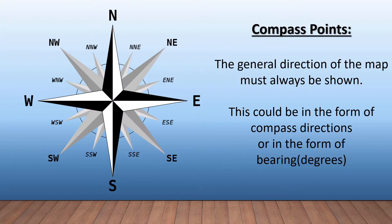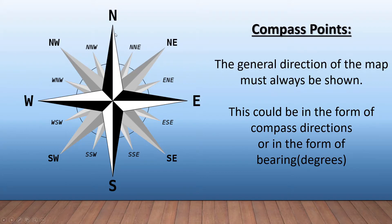Let's look at one or two examples quickly. This is what your compass points will look like. You've got your main points: north, east, south, and west, and then in between these you've got north-north-east, north-east, east-north-east, and so on. Those are your compass points and generally they'll give you a few of these, or just the main ones, or just indicate which direction is north.